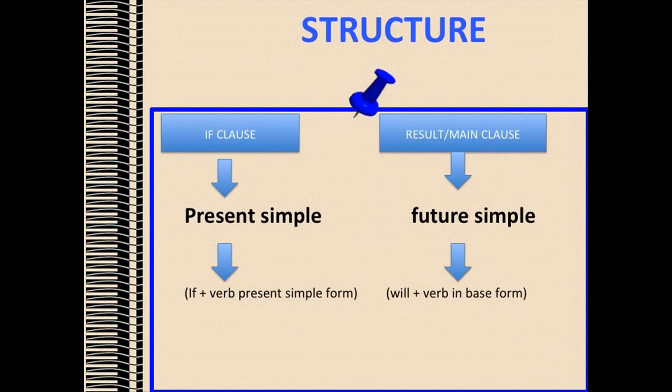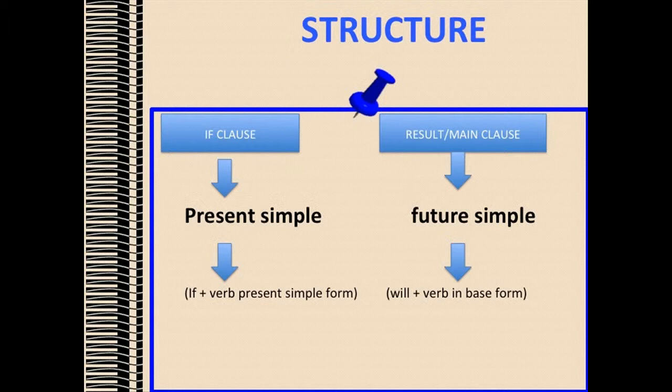Structure. The if clause is in the present simple. The result clause or main clause is in the future simple. So the verb in the if clause is in the present simple form, while in the result clause, the verb is in the simple future form: will plus the verb in the base form. Although the form of the condition is the present simple, the meaning is the future.